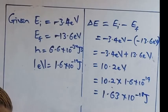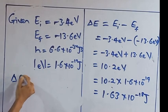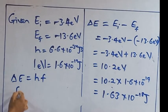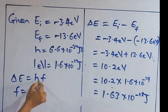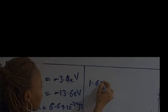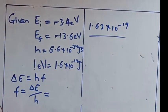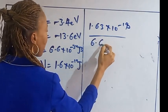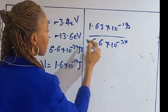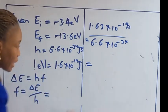The second part asks us to find the frequency of the emitted radiation. Remember that change in E equals hf, so frequency equals change in energy divided by Planck's constant. That gives us 1.63 times 10 to the power of minus 18 over 6.6 times 10 to the power of minus 34. The unit of frequency is hertz.